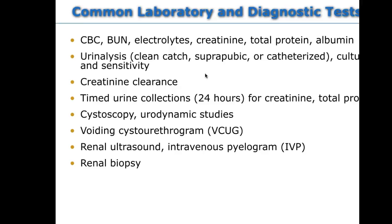Lab work you'll see done with renal or GU kids: urinalysis looking for UTI, protein in the urine, glucose in the urine; CBC; BUN; electrolytes. For renal failure in kids versus adults, it's very similar — BUN, creatinine, electrolytes, potassium. You'll also see creatinine clearance and 24-hour urine collections. A cystoscopy or VCUG is done if a patient has kidney reflux. Ultrasound, IVPs look for structural anomalies, and a renal biopsy looks for tumors.